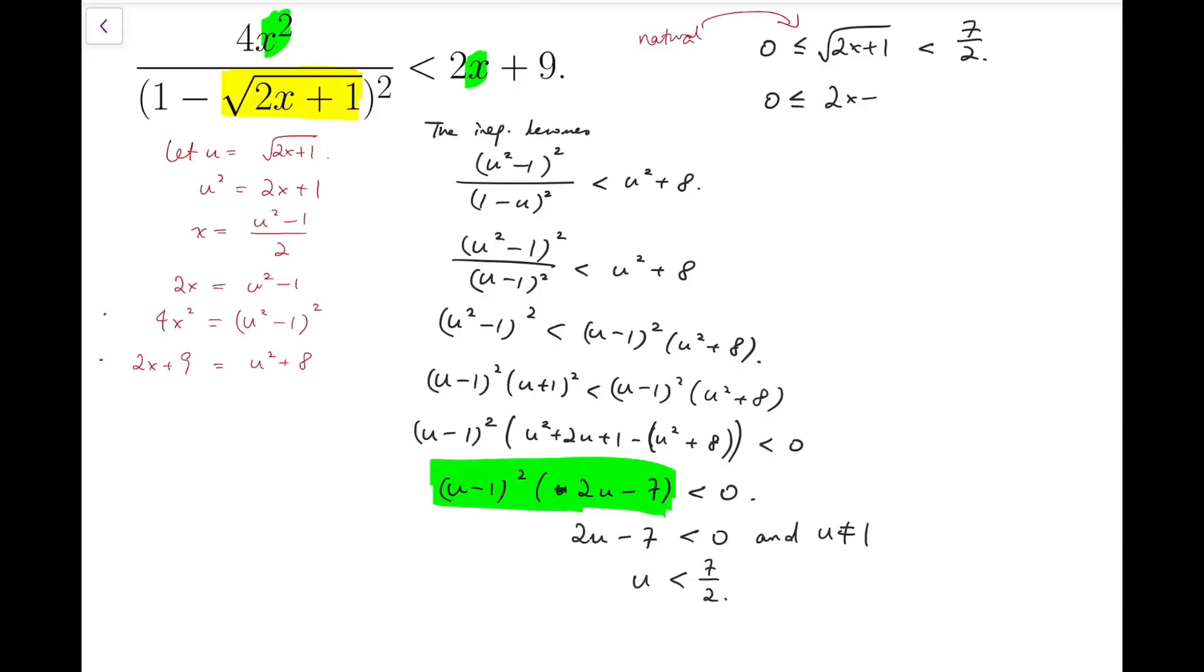So square both sides. And solving will have minus 1 over 2 to be less than or equal to x less than 45 over 8.